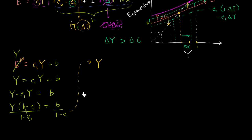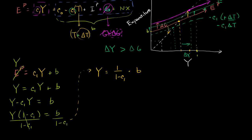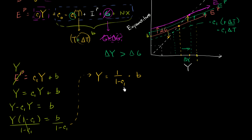We get that aggregate income — equilibrium aggregate output, aggregate GDP — is equal to 1 over (1 − C1), times B. Remember, B was all that business in the original expression.